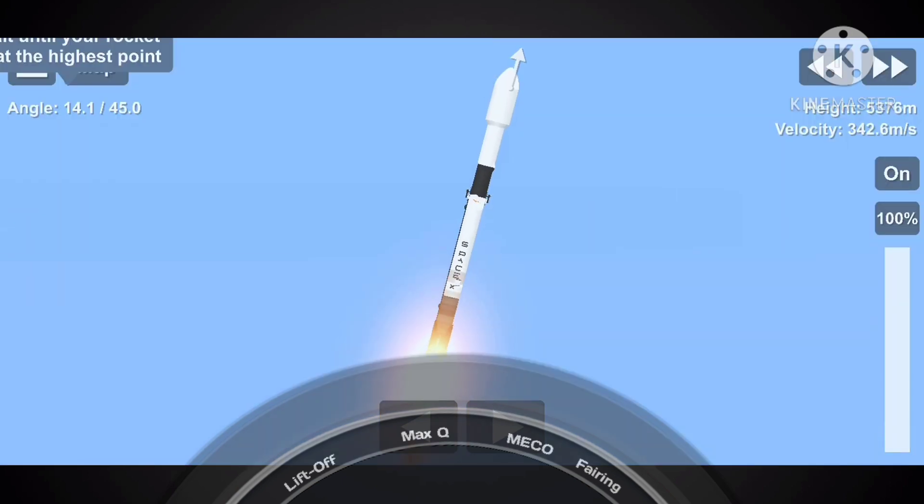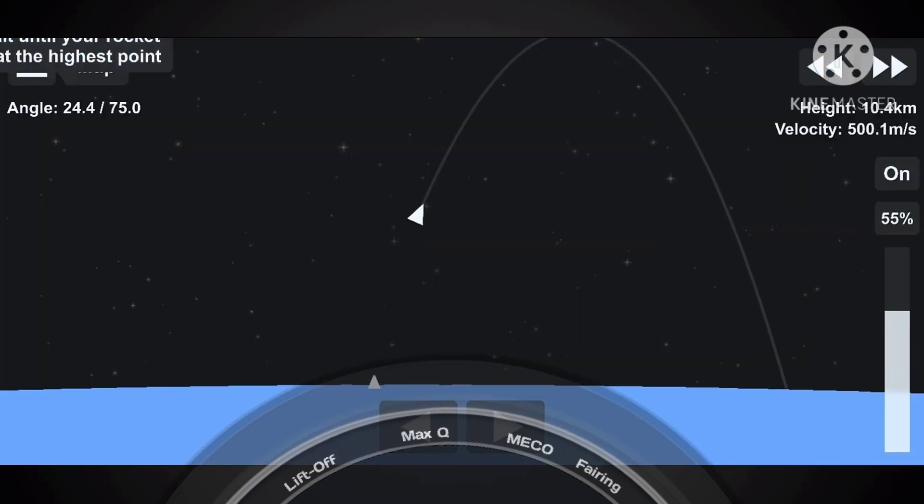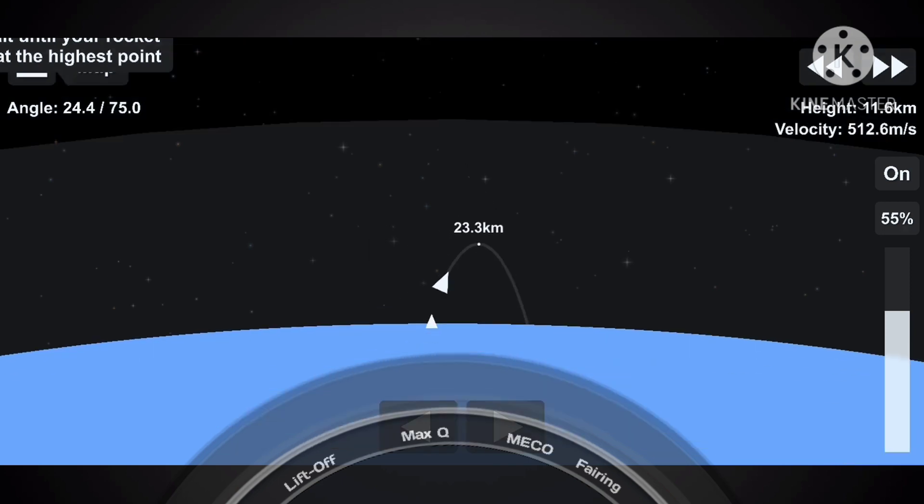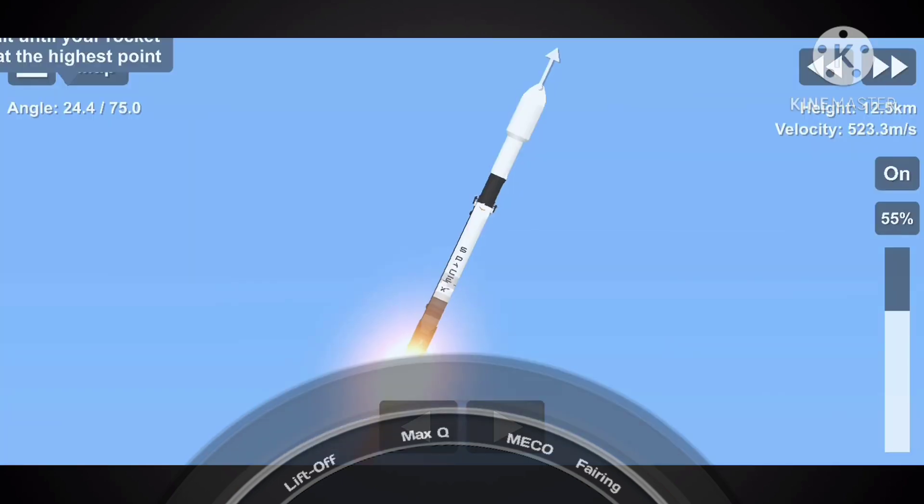Liftoff. Falcon 9 has successfully lifted off from pad 40 at Cape Canaveral Air Force Station, carrying our Starlink payload out into space. We just throttled down the engines in preparation for max Q, which stands for maximum aerodynamic pressure. This is the largest structural load that the vehicle will see throughout ascent. Max Q.